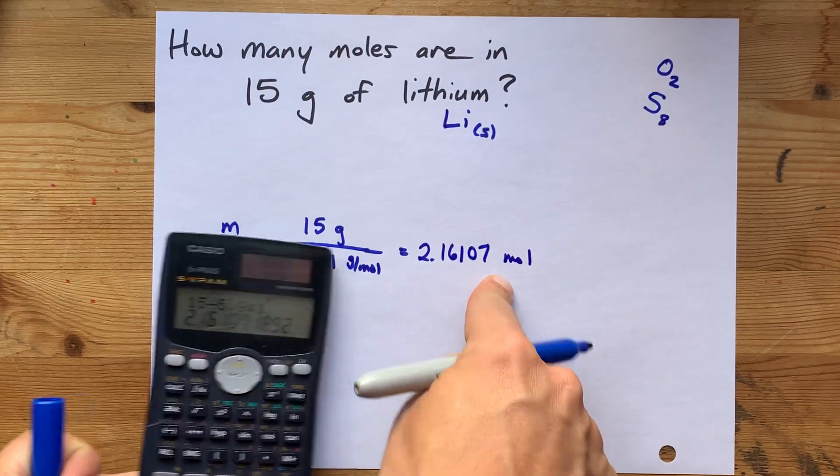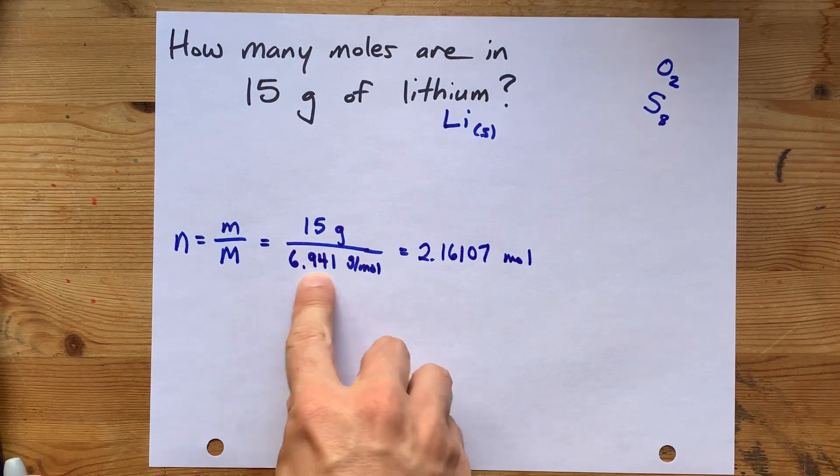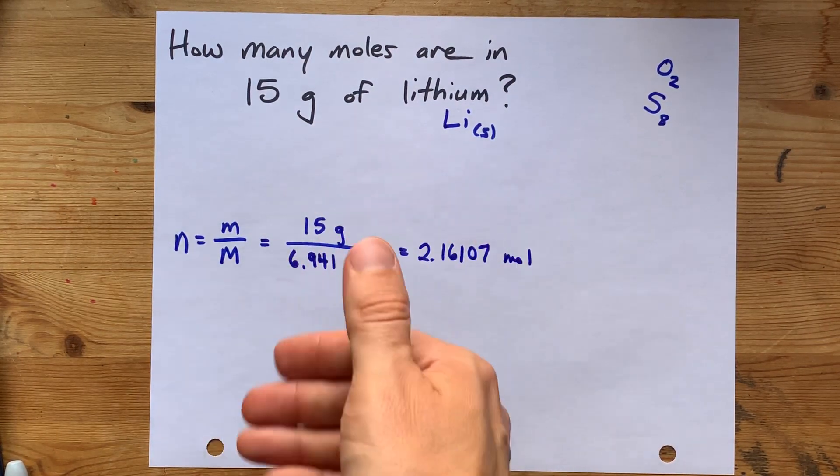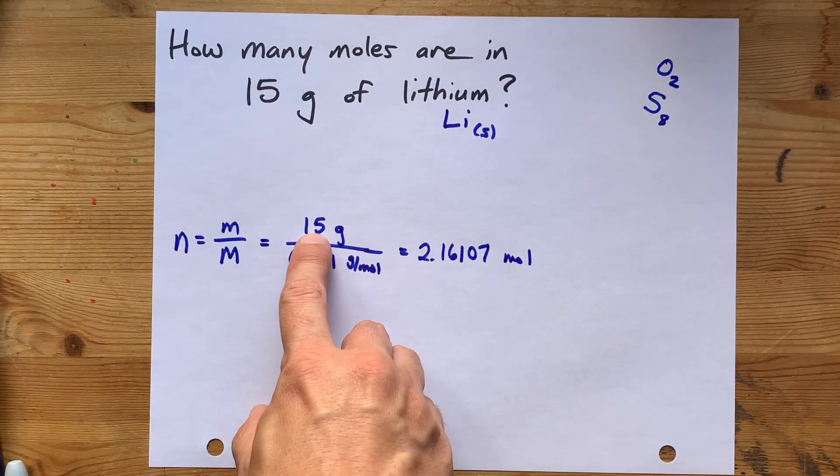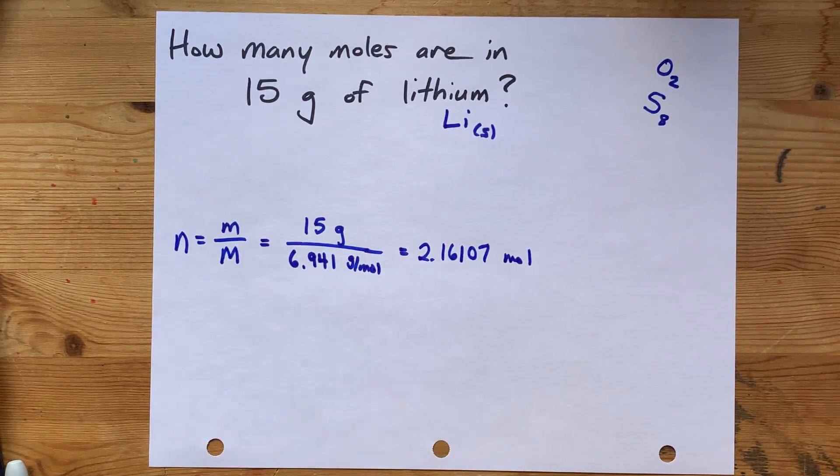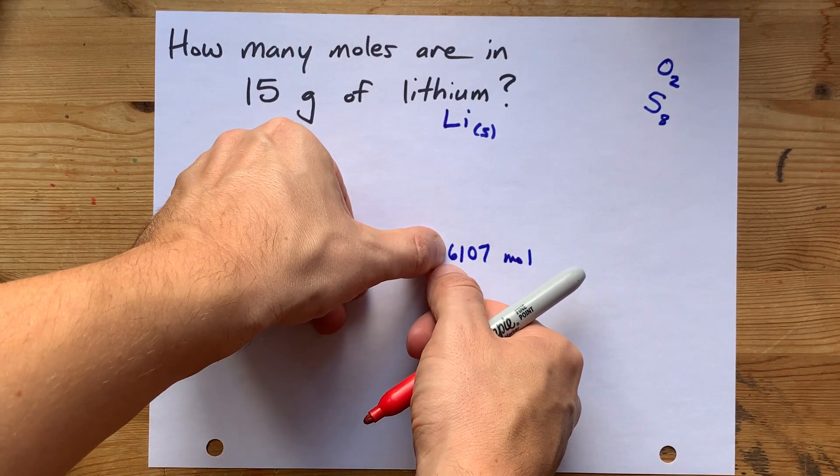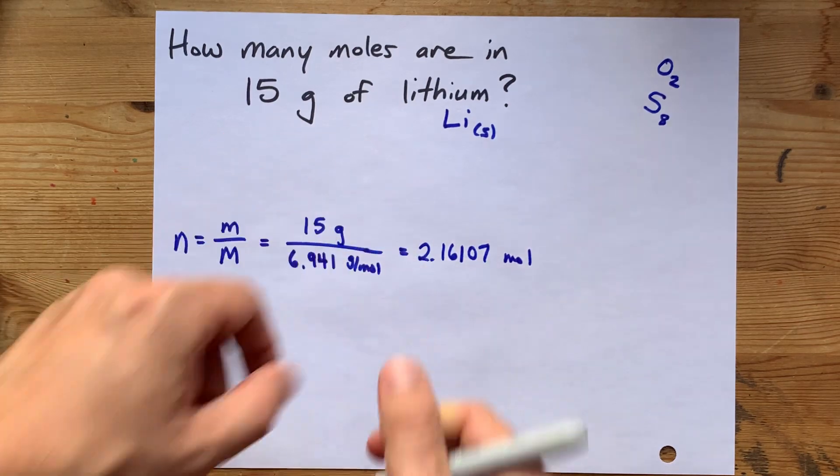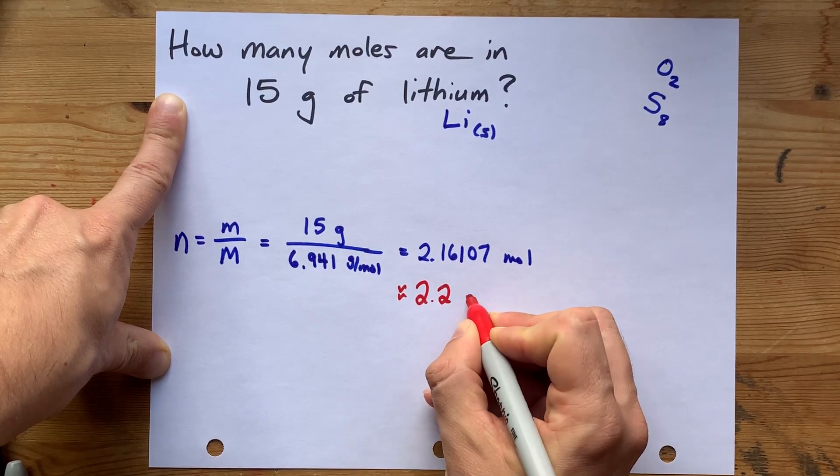Now, you might think I'm done, but chemists love significant figures. My atomic mass here had 1, 2, 3, 4 sig figs or significant digits. But the original number I was given only had 2, which means this needs to get rounded to 2 significant figures. There's my first one. There's my second one. So I look at the next number. It's more than 5, and therefore I round this number up, which means the final answer you're supposed to give here is 2.2 moles.